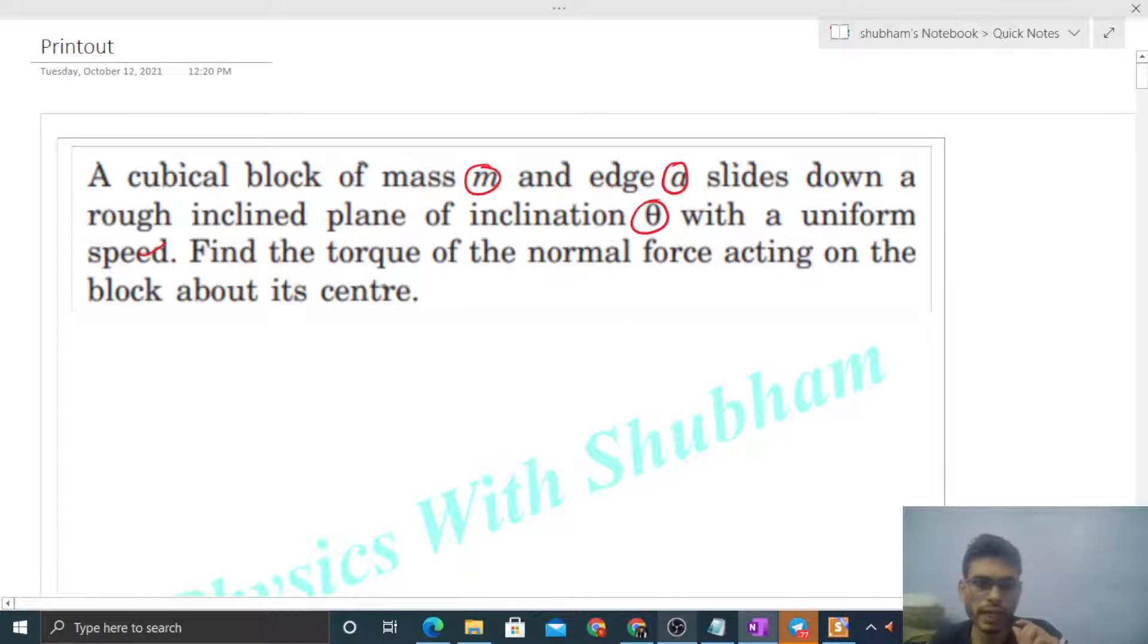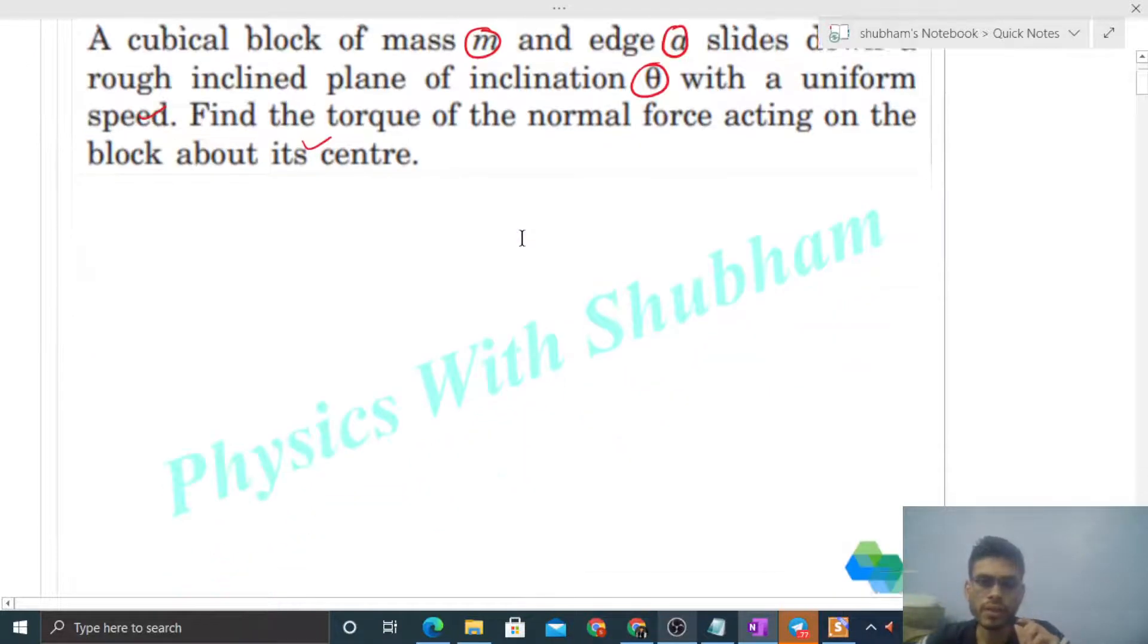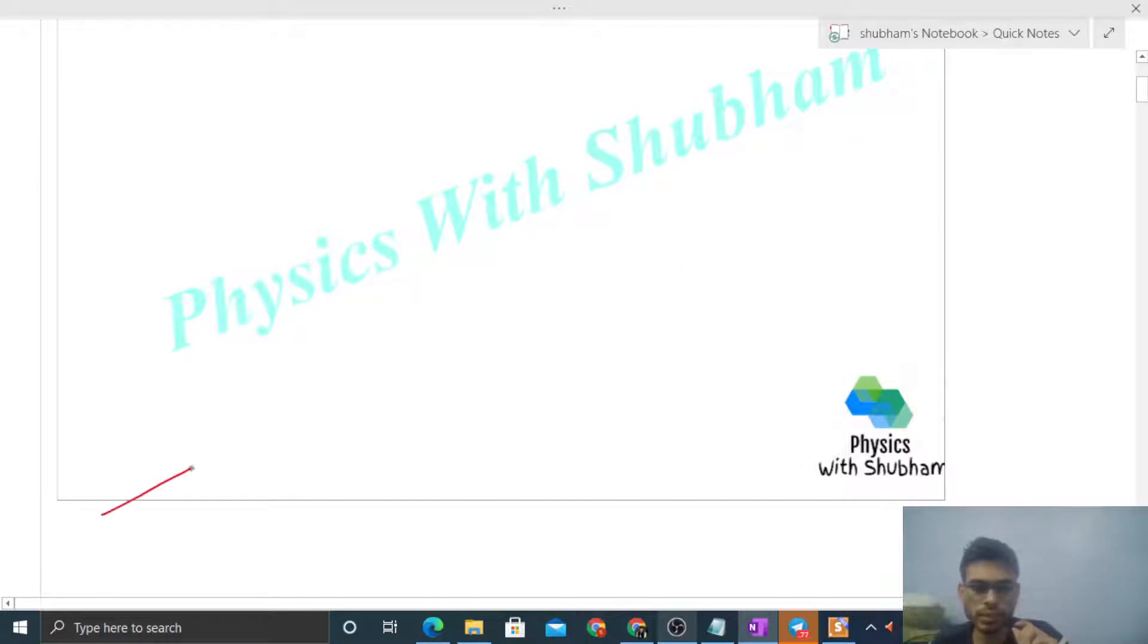So there's a rough inclined surface with angle of inclination theta, and a cubical block where each side is a. It is moving with constant speed, that is uniform speed.